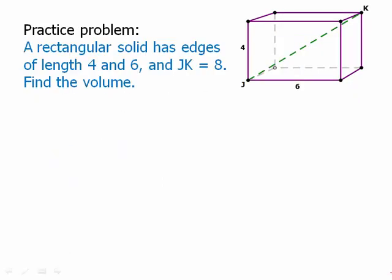Here's a practice problem. Pause the video and then we'll talk about this. Okay. So we have two lengths, the 4 and the 6. And we have the length of the space diagonal, 8. And we want to find the volume. Well, the first thing we'd need is the third length.